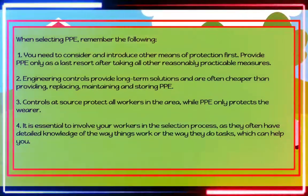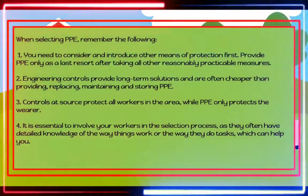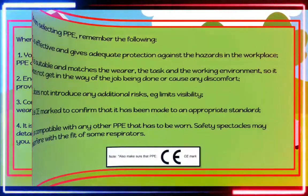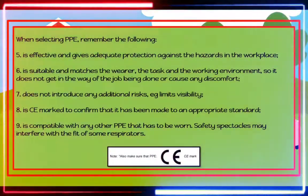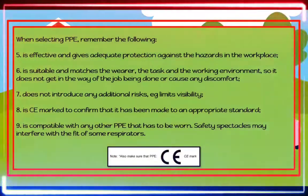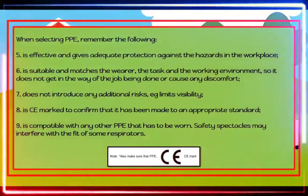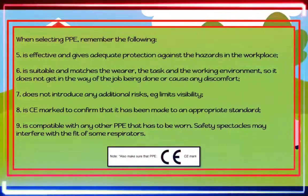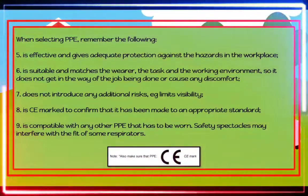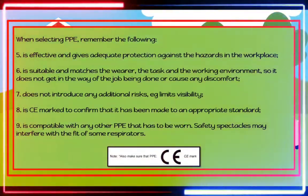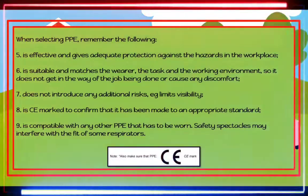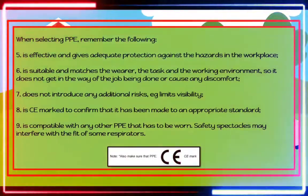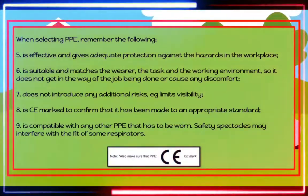Number four, involve your workers in the selection process as they often have detailed knowledge of the way things work or the way they do tasks. Number five, ensure PPE is effective and gives adequate protection against the hazards in the workplace. Number six, ensure it is suitable and matches the wearer, the task, and the working environment so it does not get in the way or cause discomfort. Number seven, it does not introduce any additional risk, for example, limiting visibility. Number eight, a CE mark confirms it has been made to an appropriate standard. Number nine, ensure it is compatible with any other PPE that has to be worn; for example, safety spectacles may interfere with the fit of some respirators.